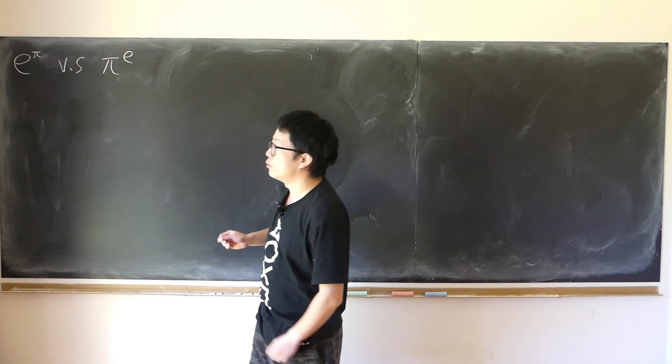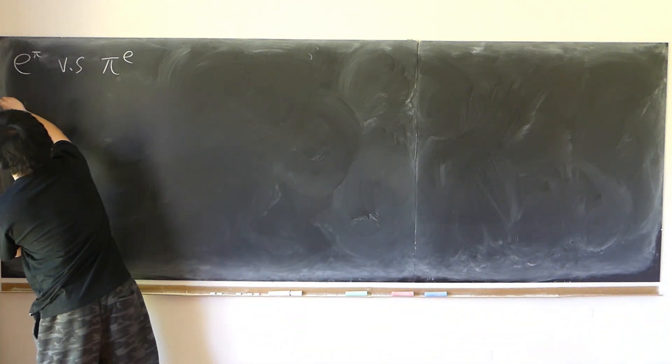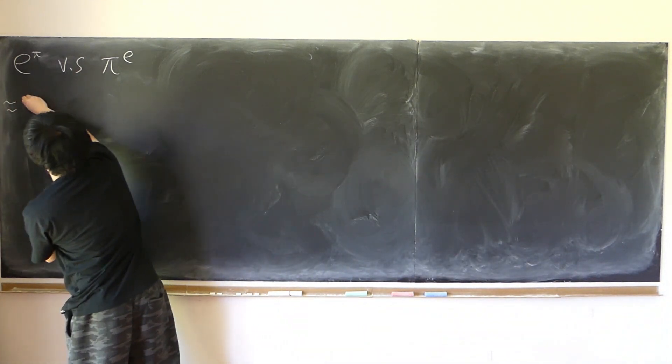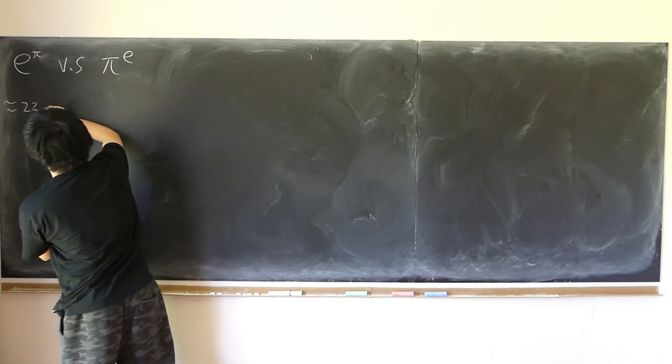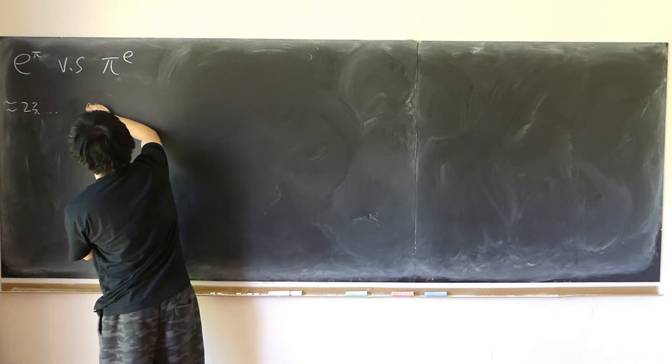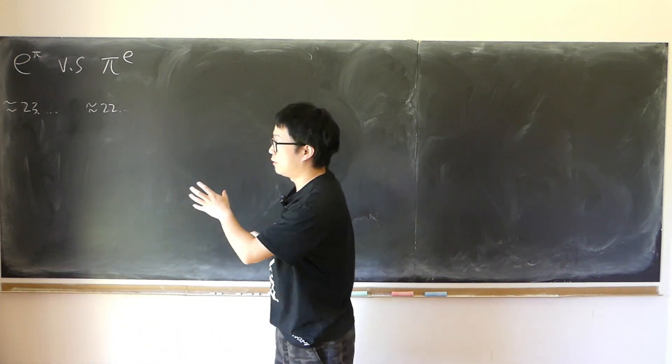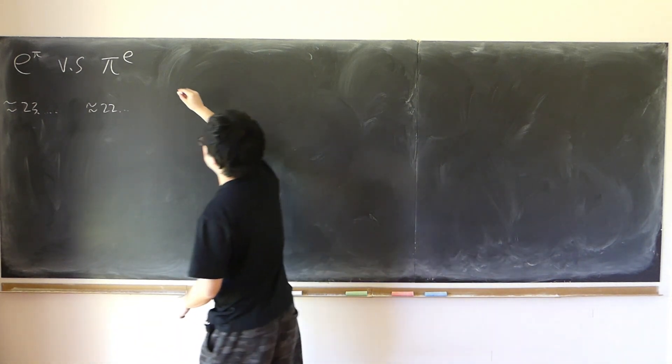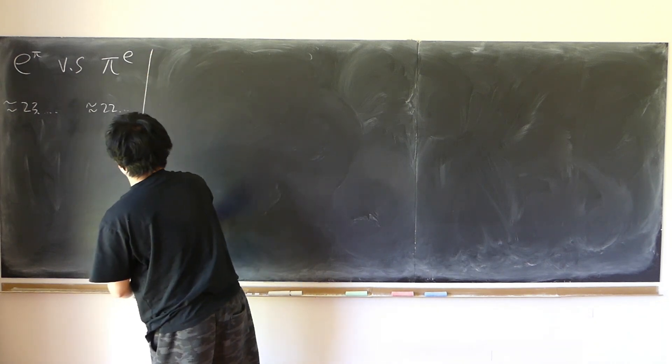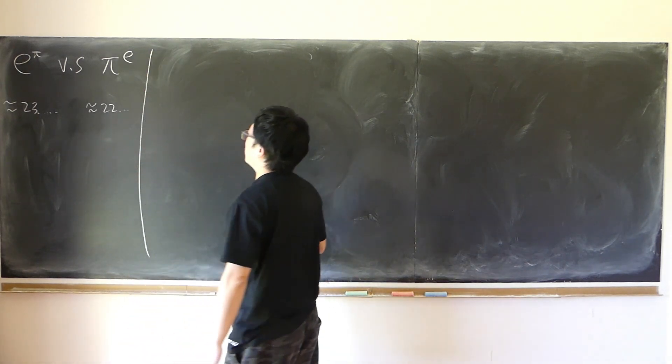Before I get into the proof, first of all, I found from Wolfram Alpha, this is approximately 23 something, and this is approximately 22 something. So if that's really the case, we can see if we can verify that. I think it's pretty accurate from Wolfram Alpha,